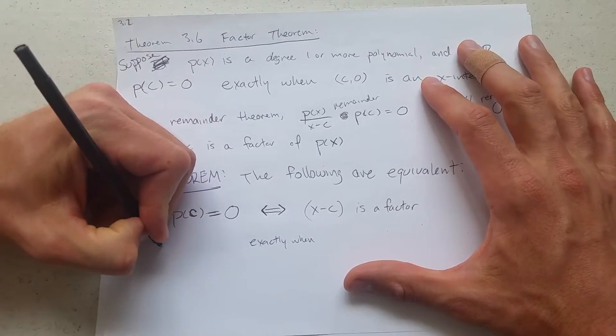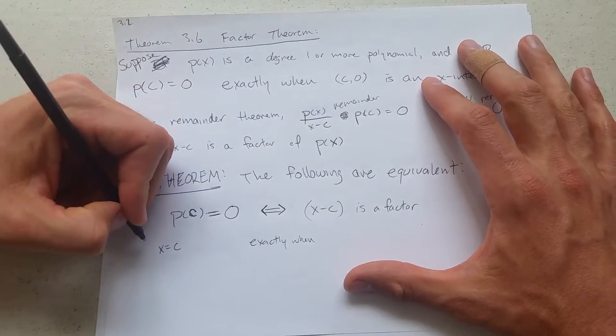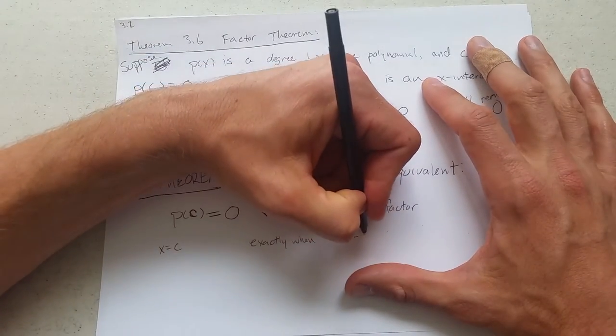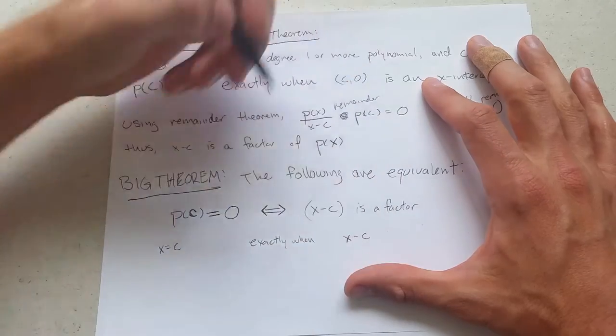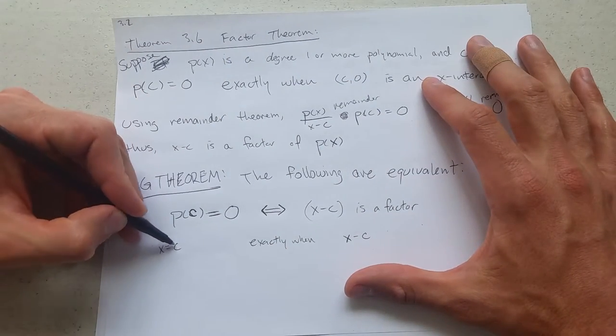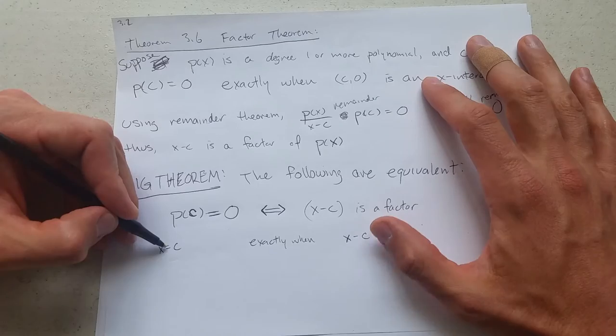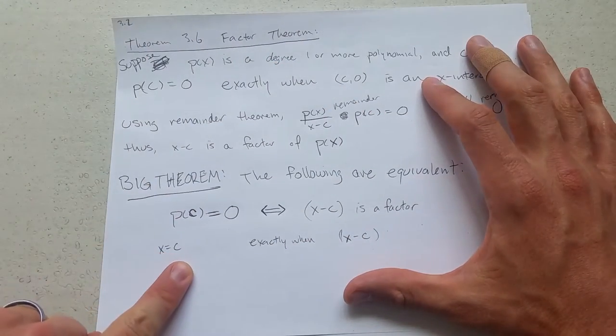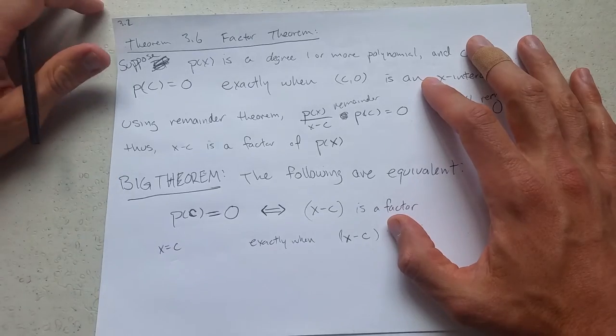So I like to think of this as if x equals c, if this is a zero, the corresponding factor will be x minus c. Now pay attention over here. It looks like c, it looks like this should be x plus c, but it really is the opposite sign. So if x equals c is a zero, x minus c will be a factor.